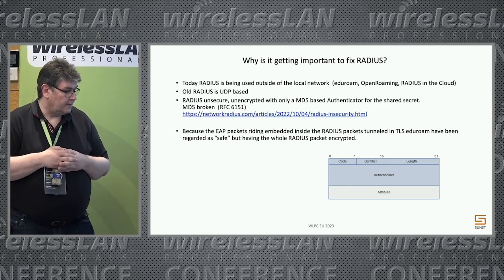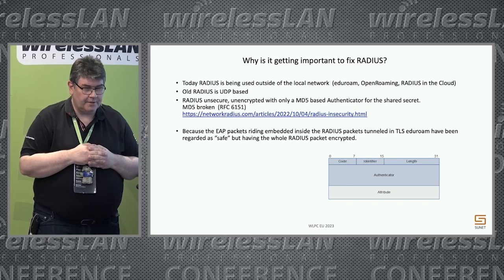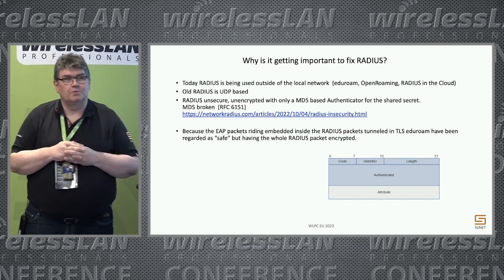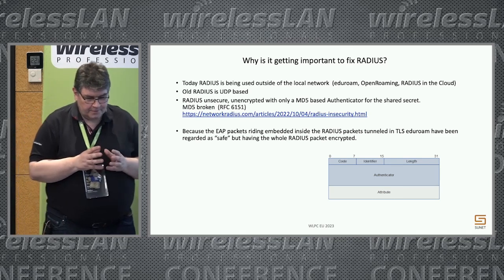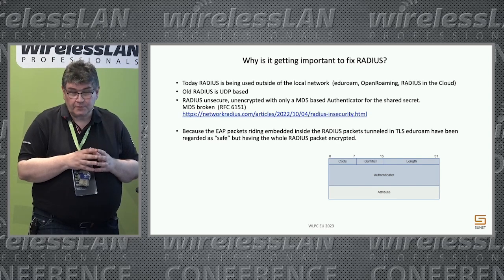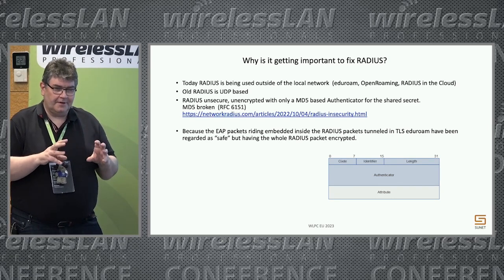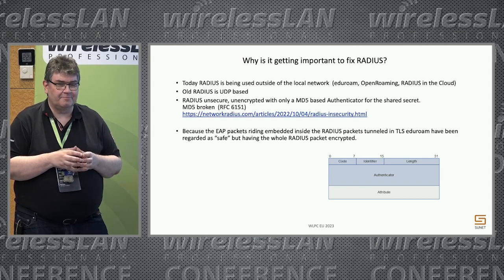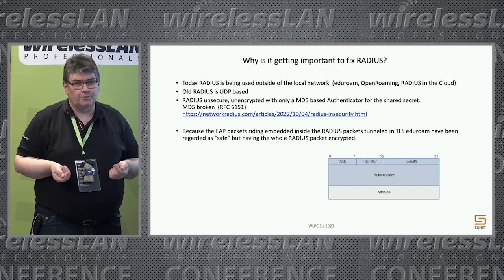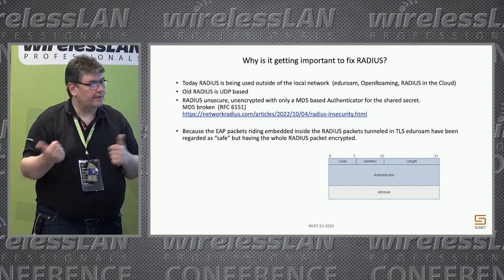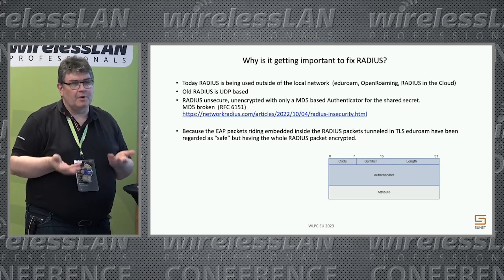Another thing is RADIUS is UDP-based. One issue we ran into about ten years ago was the fact that we made it possible to do eduroam at the main airports in Sweden, but the thing we missed was that the connection from the airport to our main office was only 100 megabits. People started using the network, the 100 megabits got congested, we started dropping packets, and people started complaining they weren't getting online. Most of you know that if you're doing 802.1x authentication, it's not just one packet going back and forth - typically it's like six, seven, sometimes even more. You just have to lose one packet and the whole authentication is gone.